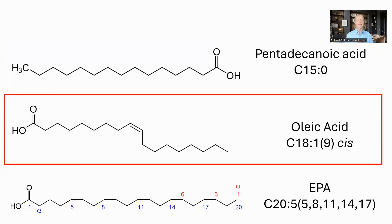Oleic acid is a monounsaturated fatty acid, meaning it has one carbon-carbon double bond on the ninth carbon, counting from the end with the carboxyl group. So C18:1(9) means 18 carbons with one double bond on the ninth carbon. This double bond causes a kink in the chain, which makes cell walls more flexible, whereas straight-tailed saturated fatty acids make walls more stiff or robust.